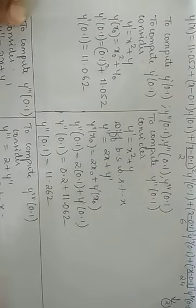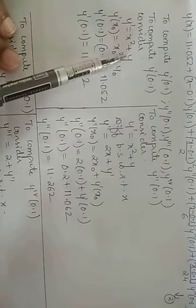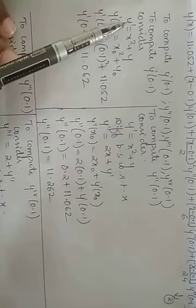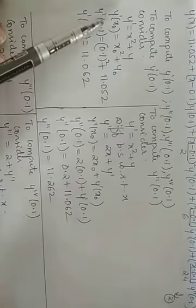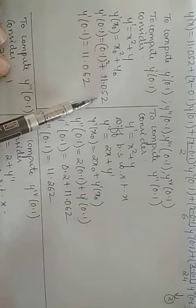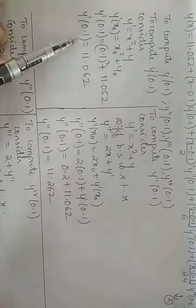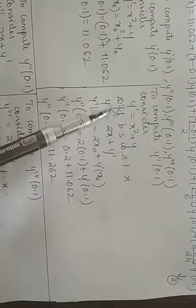Computing y'(0.1): substitute x₀ = 0.1 and y₀ = 11.052 into y' = x² + y, giving (0.1)² + 11.052. Be careful with substitution. This gives y'(0.1).